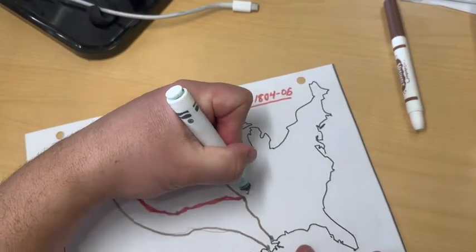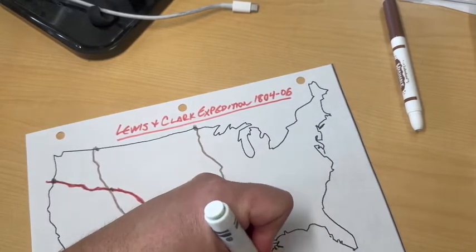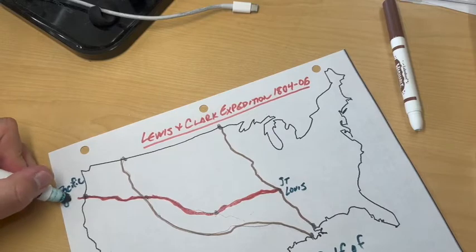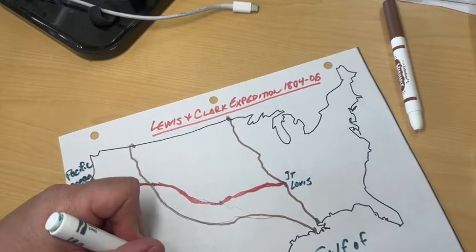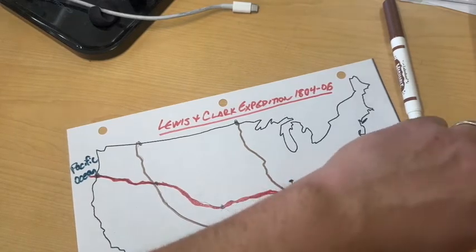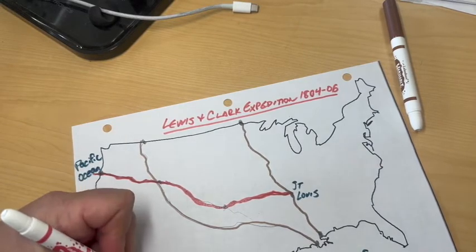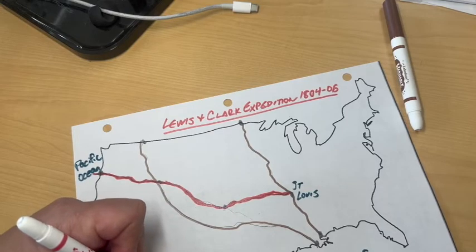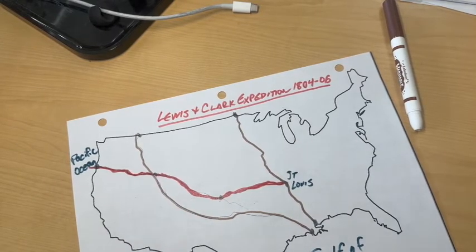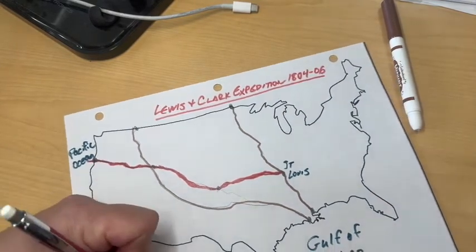I know this is St. Louis — this is where they started. Down here is the Gulf of Mexico, and this is the Pacific Ocean. Now I'm going to make a little map key. On that map key I'm going to identify what the lines represent: this box will represent the path — or route — of Lewis and Clark, and I'm going to make another box that will represent the actual Louisiana Territory.